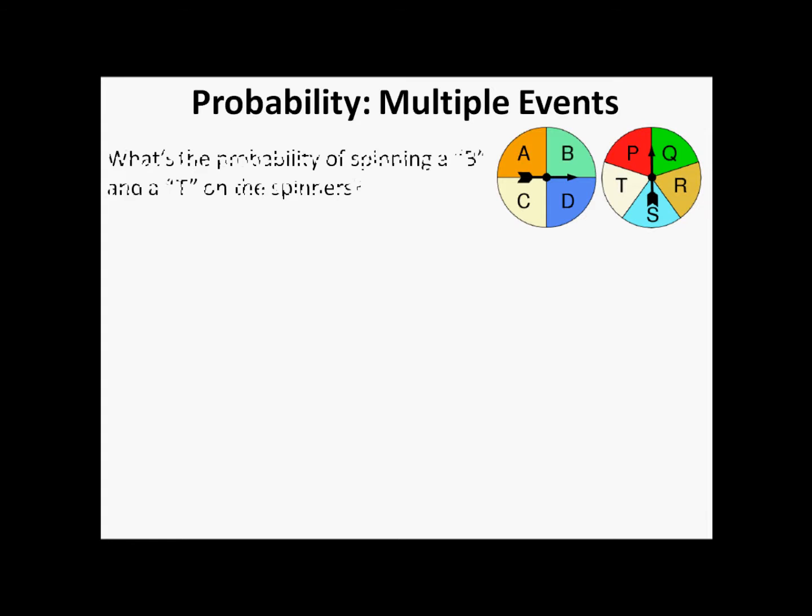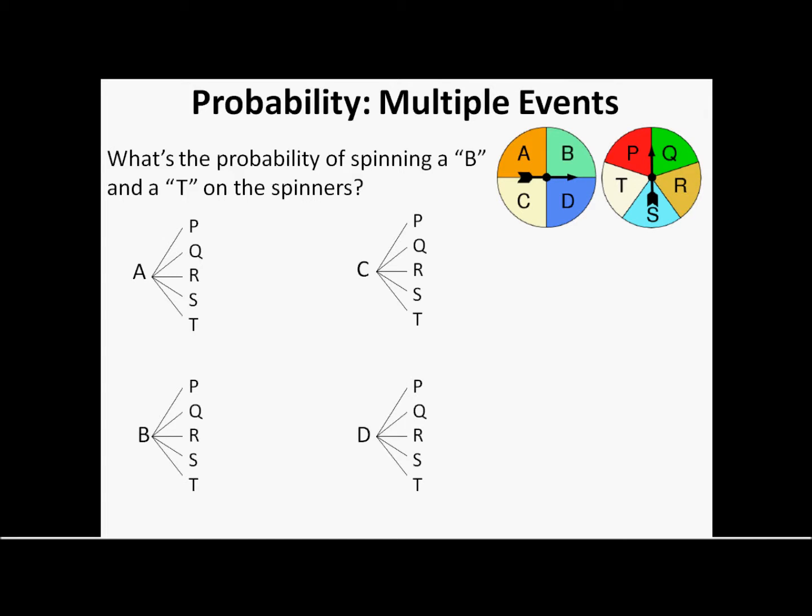So now we're looking at our spinners. What's the probability of spinning a B on one spinner and then a T on the other spinner? Well, we've got our combination tree showing all the different possible outcomes, and the only one that shows a B, then a T, is right here. So that's one out of, how many were there originally? There was five, ten, fifteen, twenty. So one out of twenty.